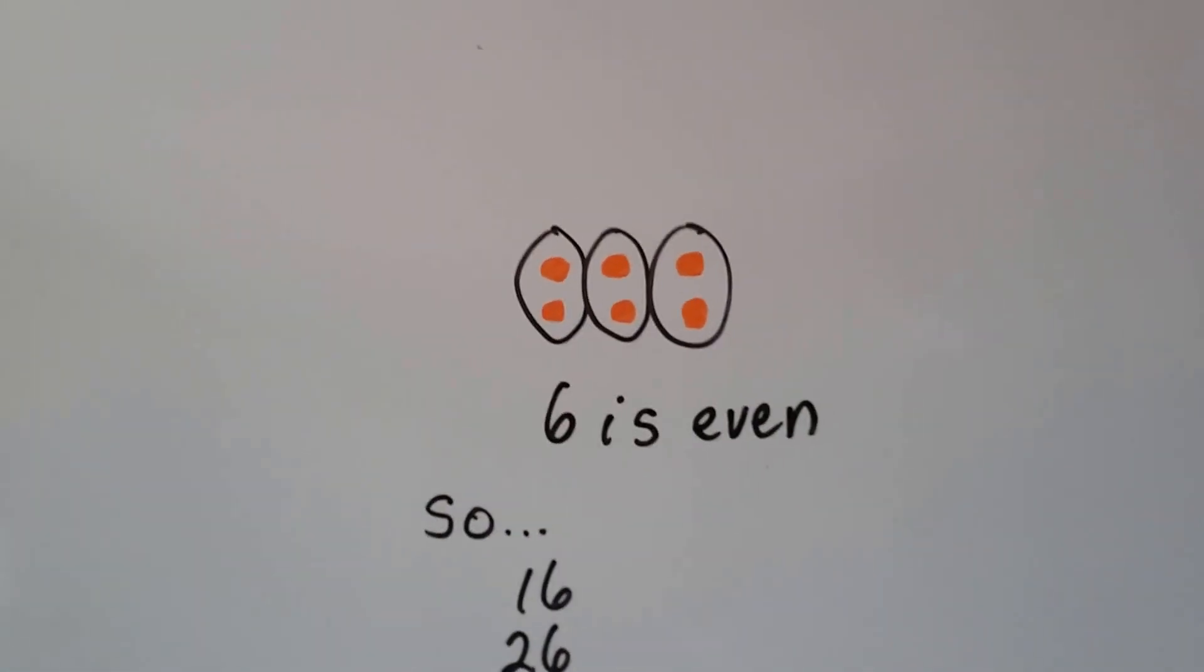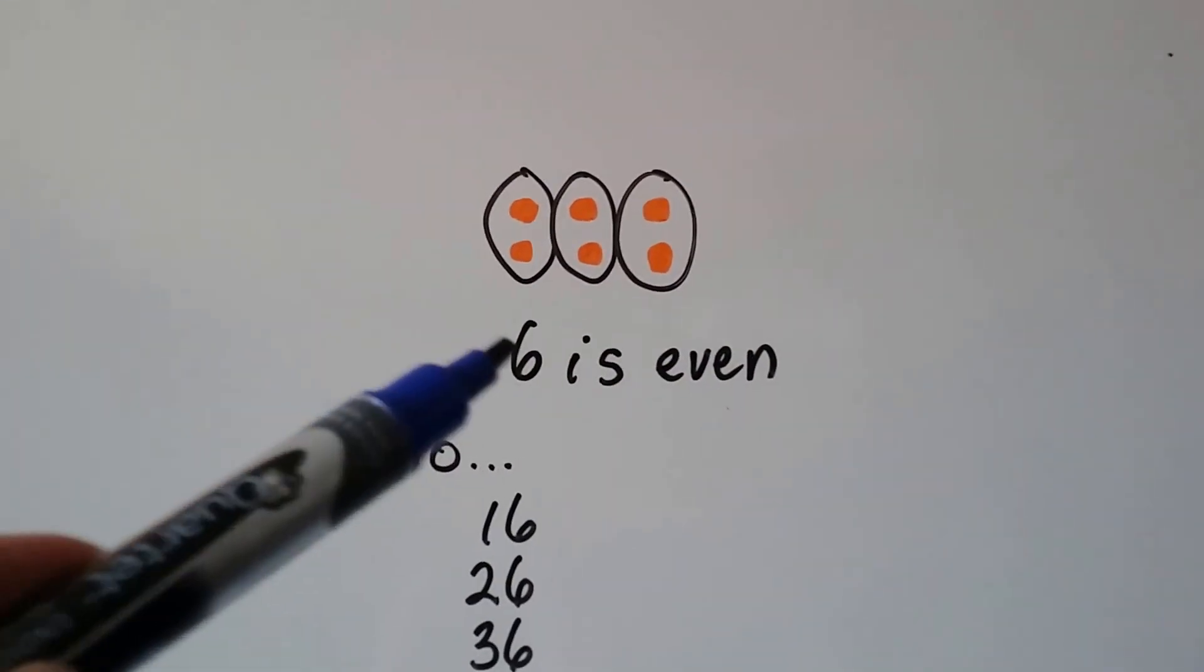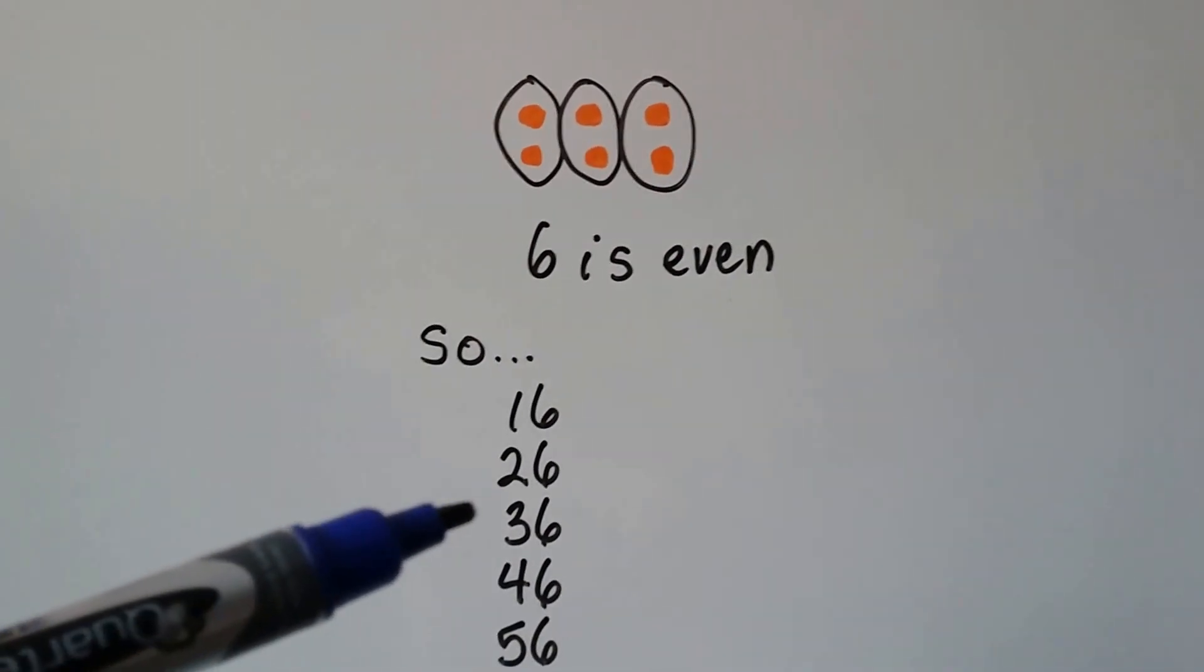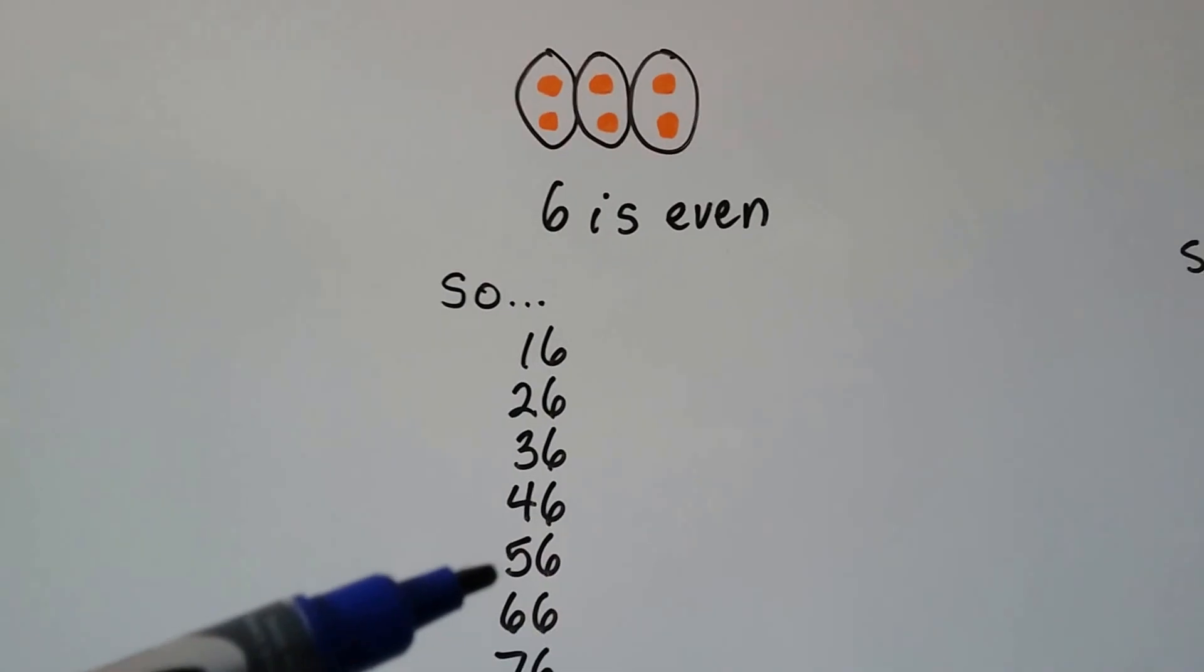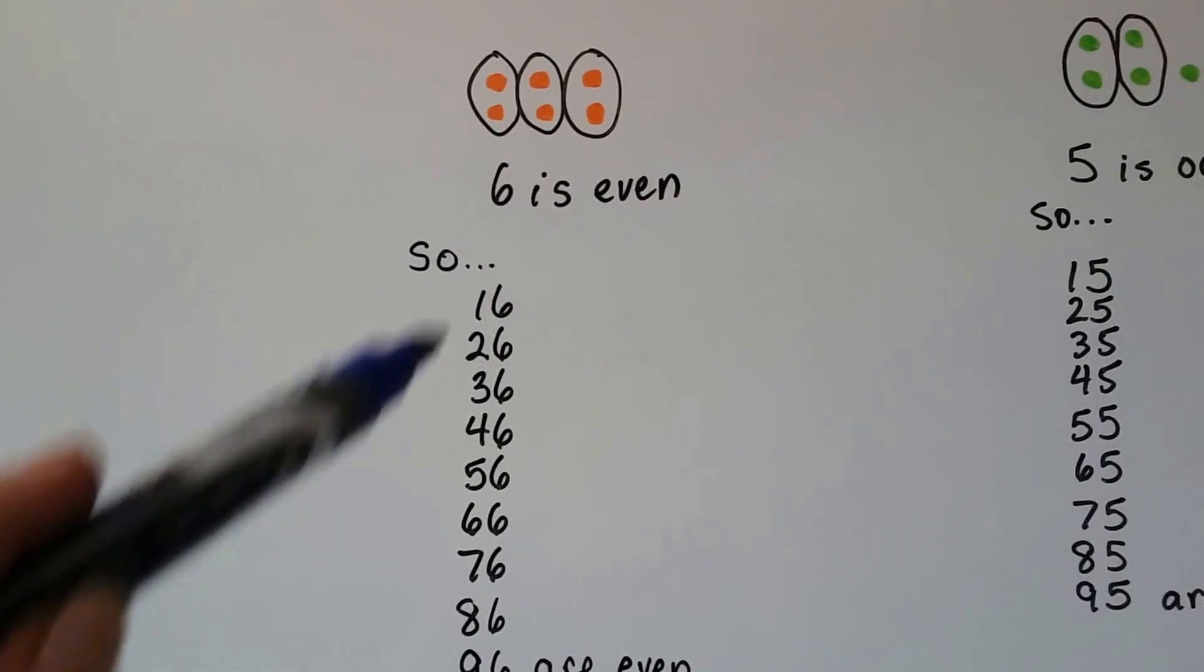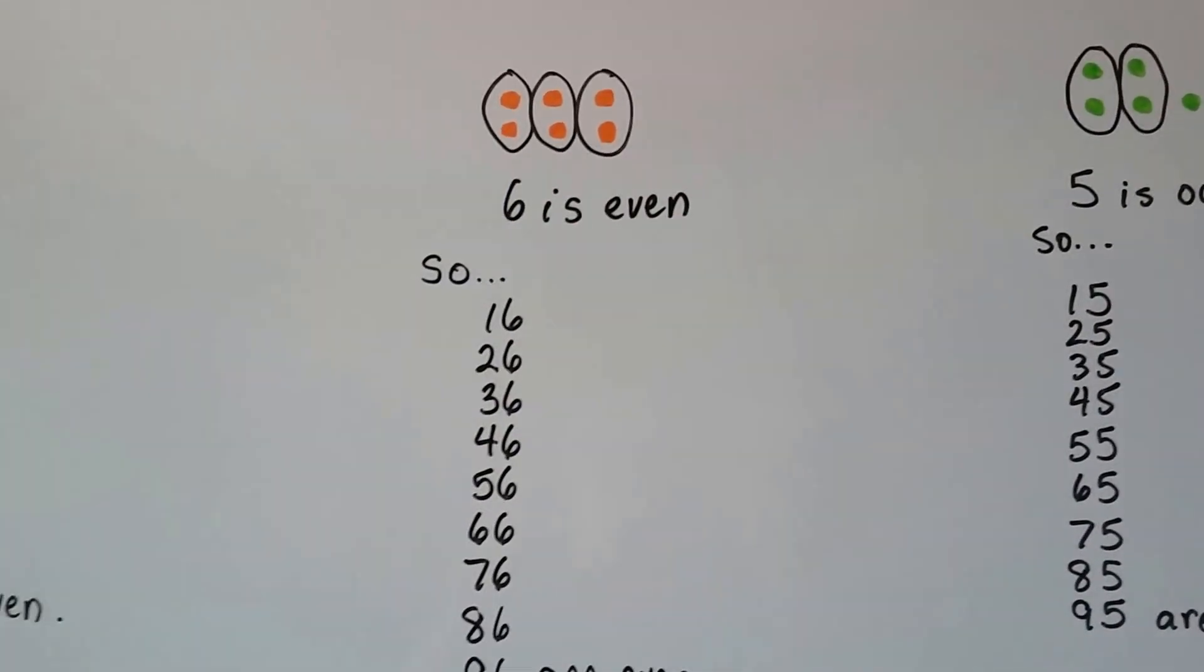6 is even, so that means 16, 26, 36, 46, 56, 66, 76, 86, 96—it ends with a 6, and 6 is even, so these are all even.